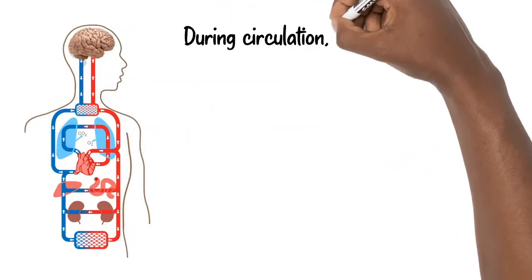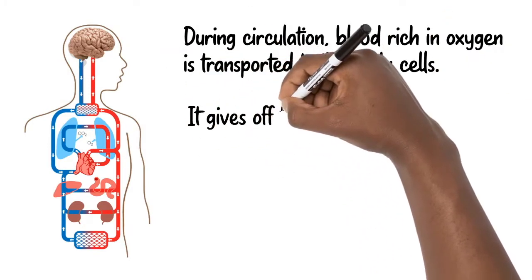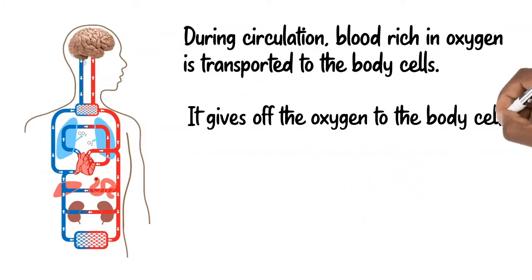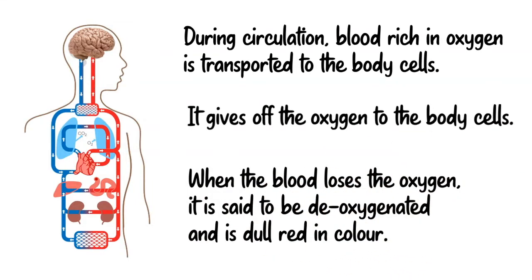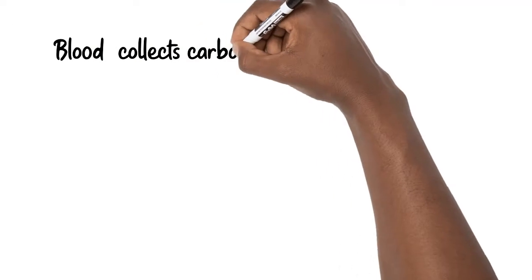During circulation, blood rich in oxygen is transported to the body cells. It gives off the oxygen to the body cells. When the blood loses the oxygen, it is said to be deoxygenated and is dull red in color.